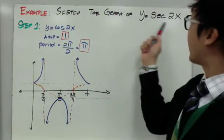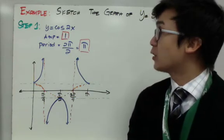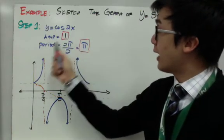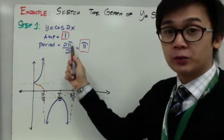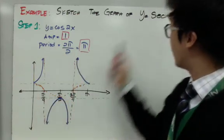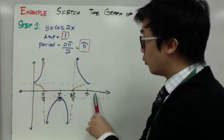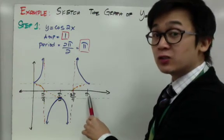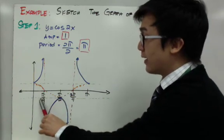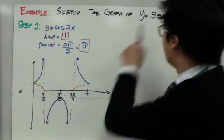Let's sketch the graph of y equals secant 2x. The first step is to find the amplitude and period of your cosine function, because that's the inverse of the secant function. The amplitude for cosine 2x is 1, and the period is 2 pi over b, where b is 2, giving pi. So you have an amplitude of 1 and a period of pi. Partition it into four equal parts: half of pi is pi over 2, half of that is pi over 4, then add those to get 3 pi over 4. So these are your four partitions for the secant graph.